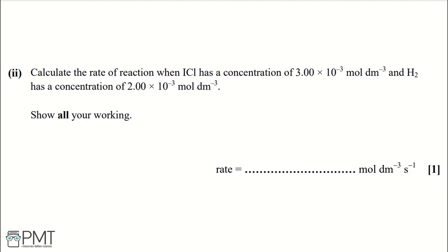Part two: calculate the rate of reaction when ICl has a concentration of 3.00 times 10 to the negative 3 mol dm⁻³, showing all working. From the previous question, the rate equation is: rate equals 0.163 multiplied by [ICl] multiplied by [H2], where 0.163 is our K value.